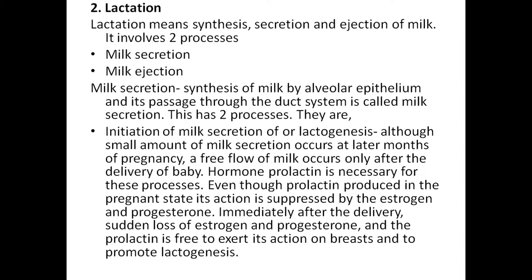Milk secretion has two processes. First is initiation of milk secretion, or lactogenesis. Although a small amount of milk secretion occurs in the later months of pregnancy, a free flow of milk occurs only after delivery of the baby. The hormone prolactin is necessary for this process.